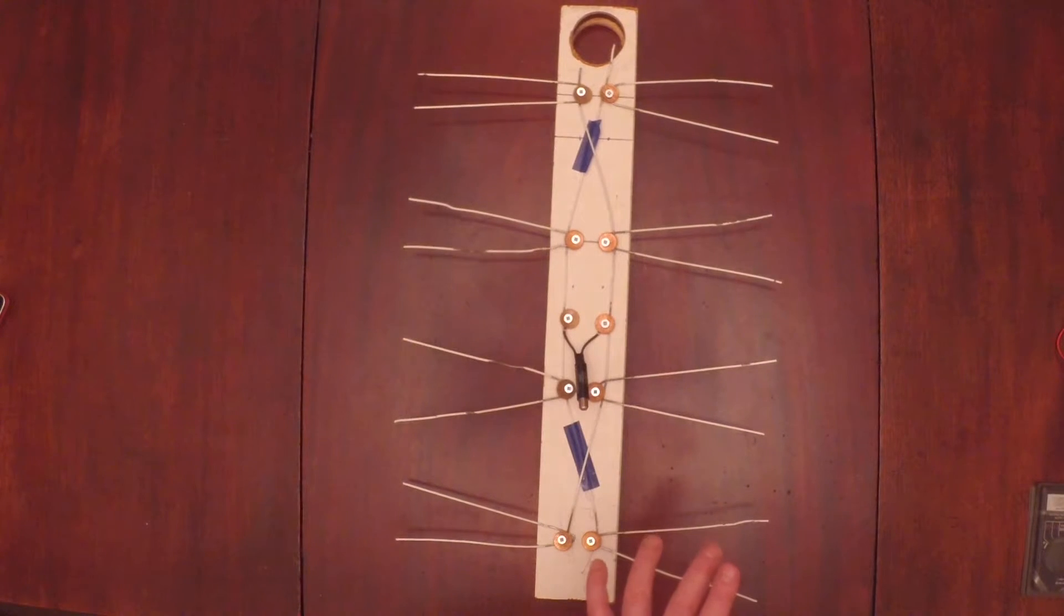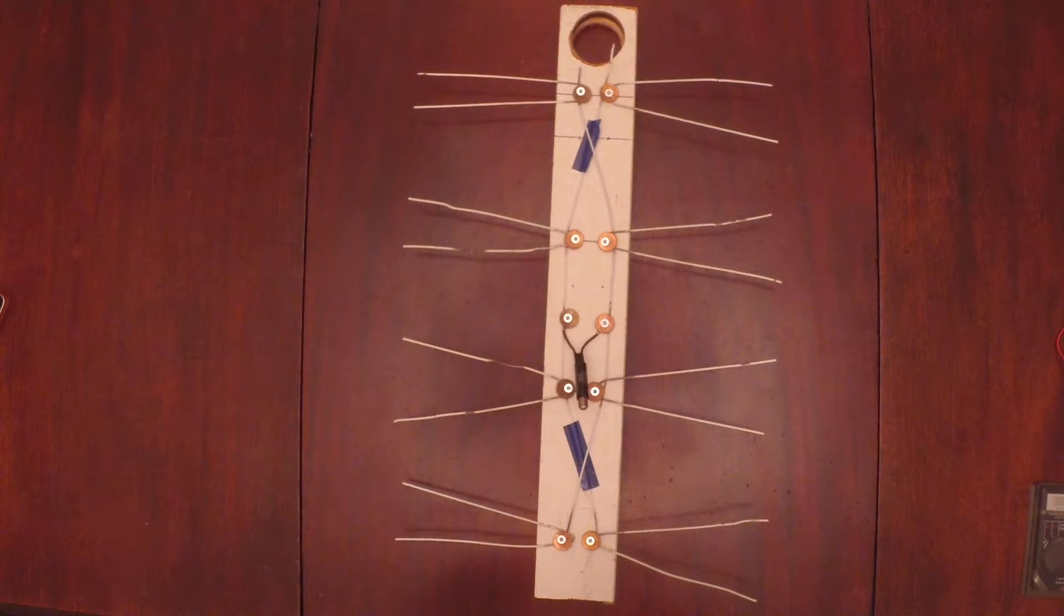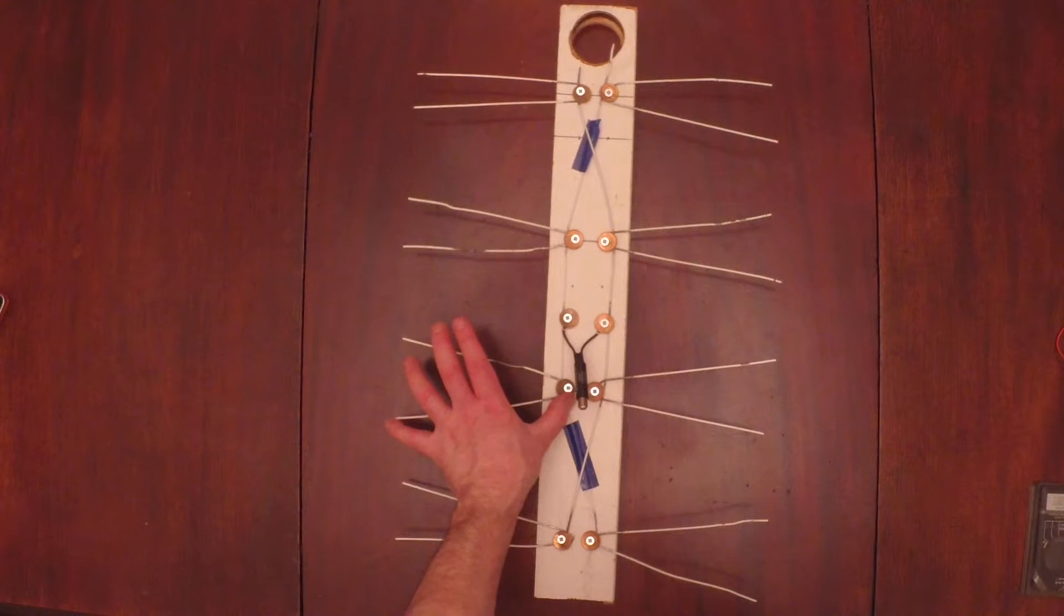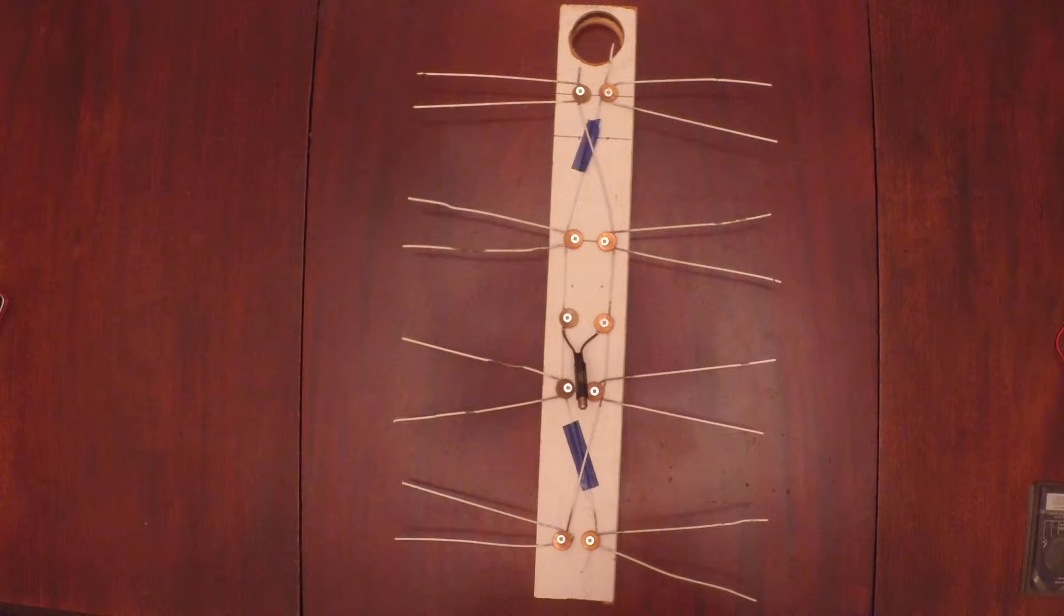It's tuned by frequency, but it's a fairly general one, so it'll get all of your TV channels, but you can actually calculate it. If you go to your federal website, it'll tell you what frequencies the TV channels are transmitting on, and then you can calculate. I think these are quarter wavelengths. Basically, you divide the speed of light, which is 3×10^8 meters per second, by the frequency, and that'll give you the wavelength. Divide by four, you'll get the quarter wavelength, and then you can tune them, but this works for pretty general areas.